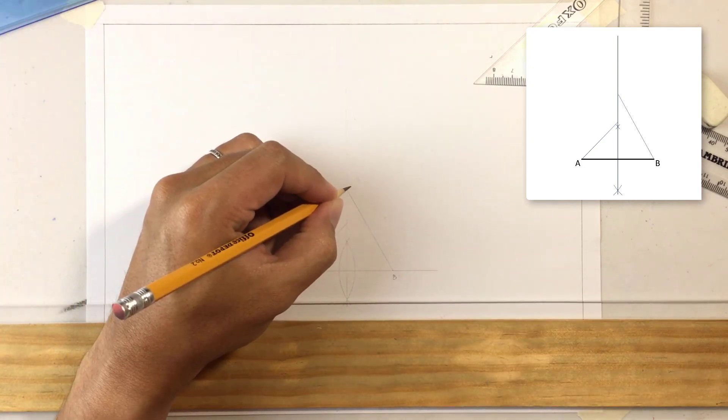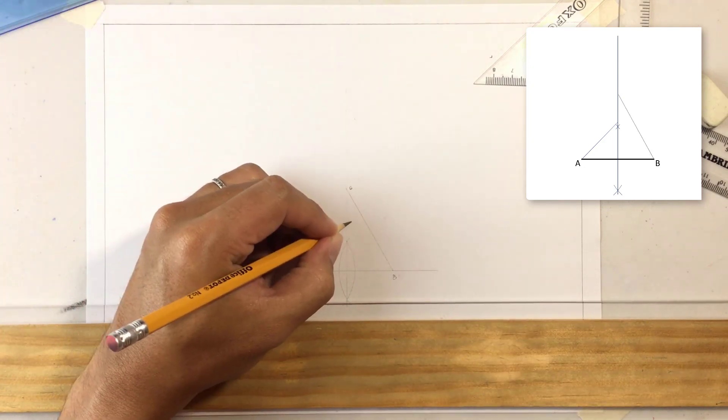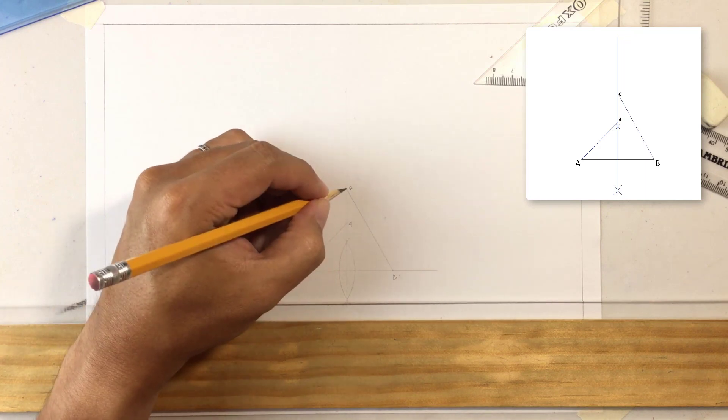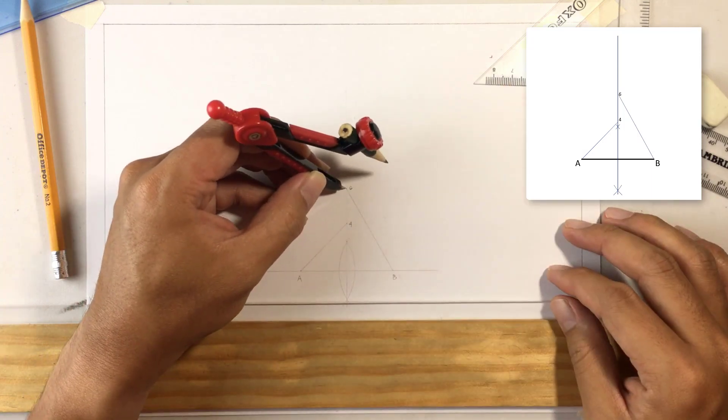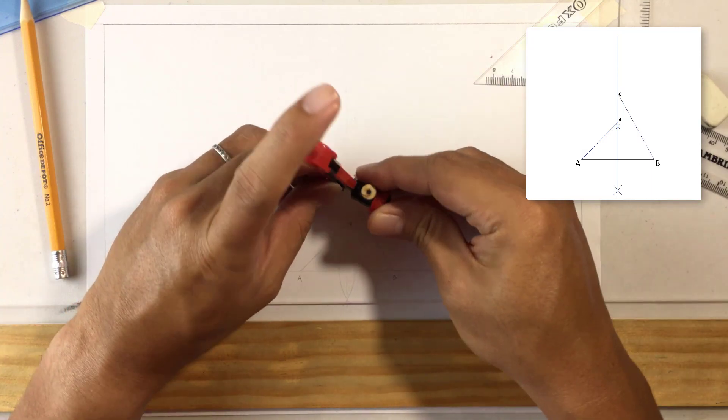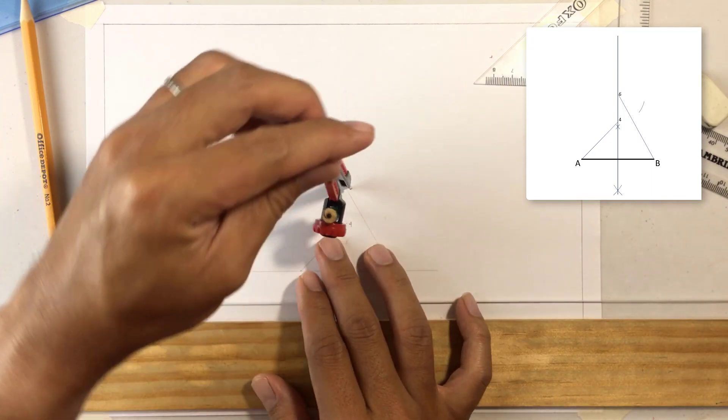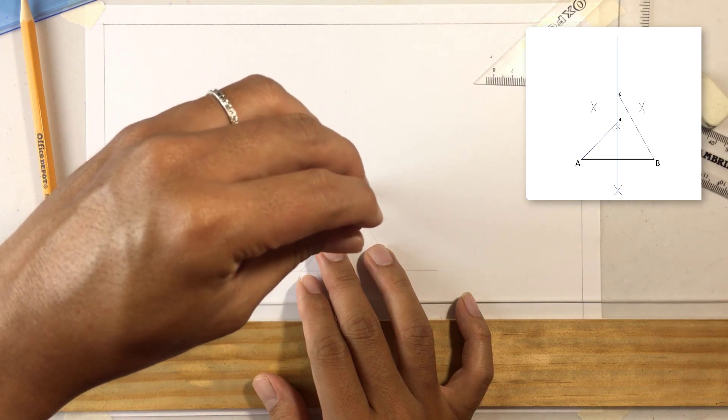Now, once you have both lines, label them as 6 and 4. After that, you bisect 4 and 6. So, that's the line segment 4, 6.